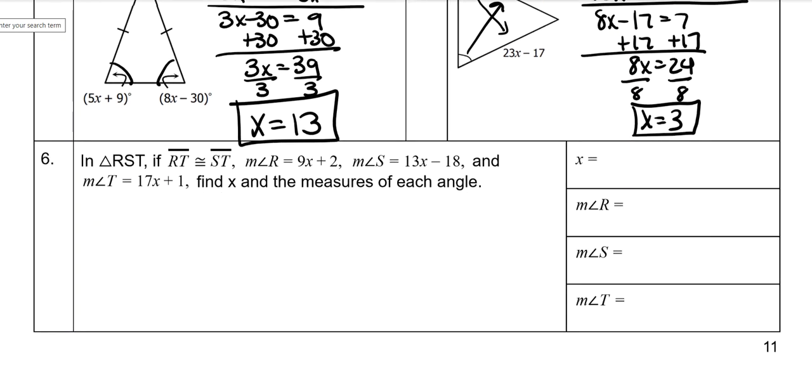So now they're trying to trick you up by not giving you a picture. So the best thing for you to do is to draw a triangle RST and mark what's congruent. So RT is congruent with ST. Those are my two sides, meaning that across from them are my congruent angles. So R and S are the angles that are equal, so I have to set these equal to each other.